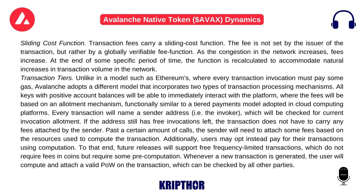Transaction tiers: unlike in a model such as Ethereum's, where every transaction invocation must pay some gas, Avalanche adopts a different model that incorporates two types of transaction processing mechanisms. All keys with positive account balances will be able to immediately interact with the platform, where the fees will be based on an allotment mechanism, functionally similar to a tiered payments model adopted in cloud computing platforms. Every transaction will name a sender address — the invoker — which will be checked for current invocation allotment. If the address still has free invocations left, the transaction does not have to carry any fees attached by the sender. Past a certain amount of calls, the sender will need to attach some fees based on the resources used to compute the transaction. Additionally, users may opt instead to pay for their transactions using computation. Future releases will support free, frequency-limited transactions, which do not require fees in coins but require some pre-computation.